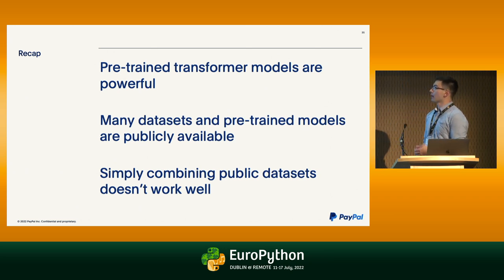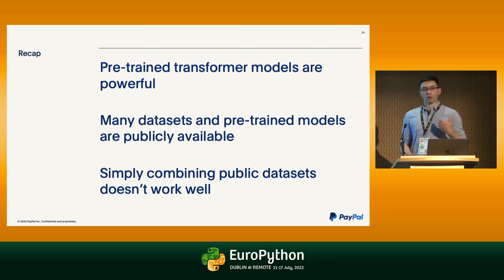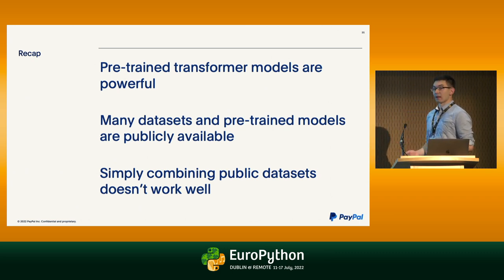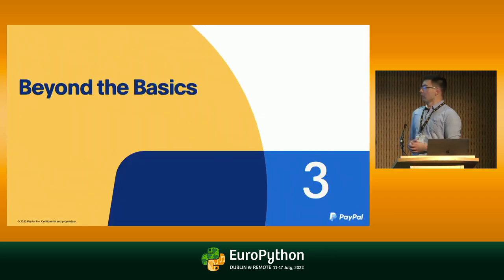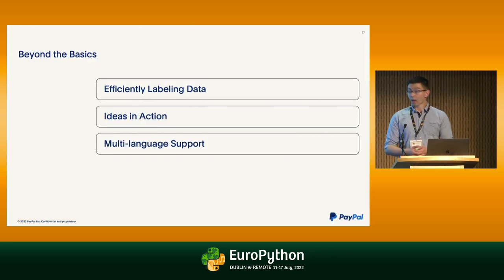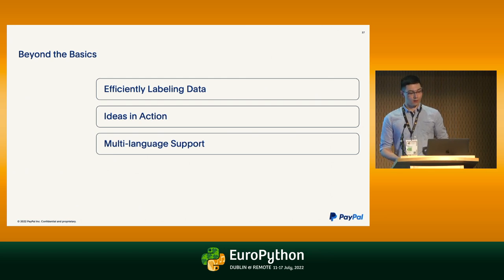Quick recap: pre-trained transformers are very powerful. On the plus side, there are a lot of open-source datasets and pre-trained models that you can use to get started. But just combining these public datasets probably won't work very well. Now I'll talk about how we can extend beyond all of that — covering three main things: how we can efficiently label data, how some of these ideas play out in action, and briefly, multi-language support.